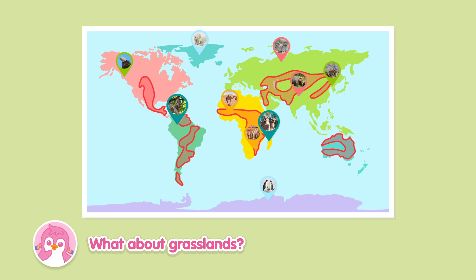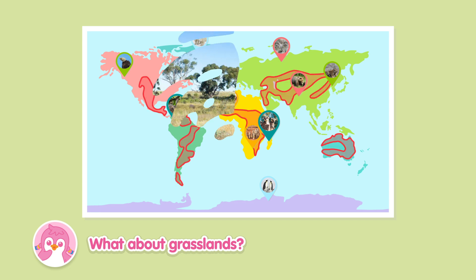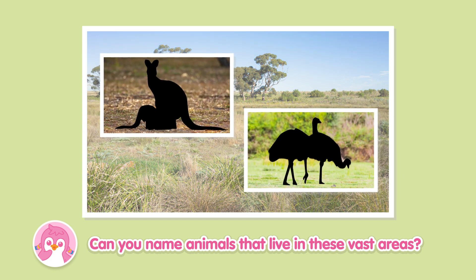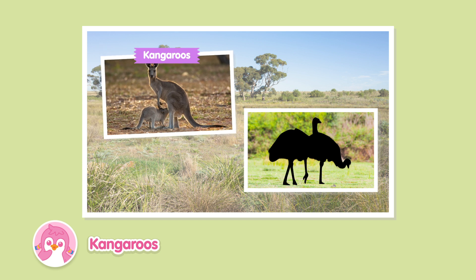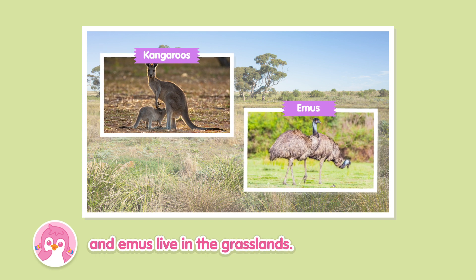What about grasslands? Can you name animals that live in these vast areas? Kangaroos and emus live in the grasslands.